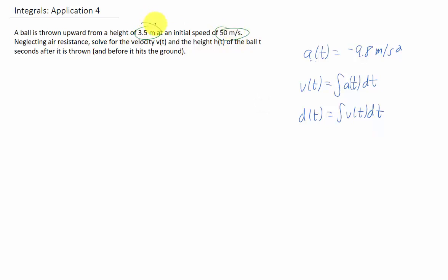A ball is thrown upward from a height of 3.5 meters. That means that the initial position of our ball is 3.5 meters. Using this d for displacement, that means d(0) is 3.5. And if our initial velocity is 50 meters per second, that means v(0) is 50. Okay, let's see what we get.